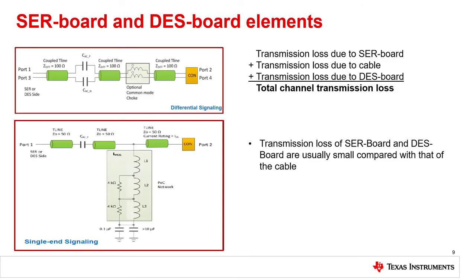Now let's focus on the serializer or deserializer printed circuit board. On the top, a simplified diagram of a differential signal path from a serializer or deserializer IC to its connector is shown. On the bottom, a simplified diagram of the single-ended signal path from a serializer or deserializer IC to its connector is shown. When calculating the overall transmission loss of a channel, transmission loss due to each of the components like PCB traces and loss due to components themselves must be included and added to the transmission loss of the cable.